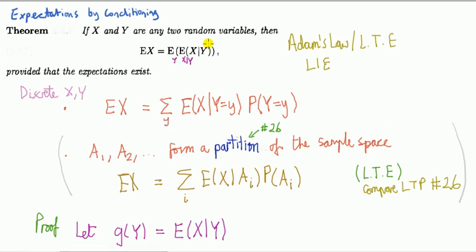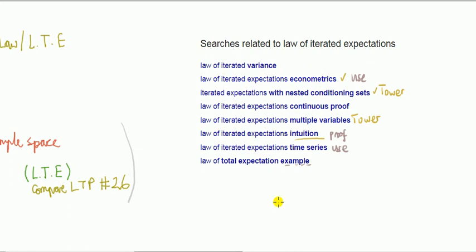Well, we can condition on more than one event, or more random variables, and this result will still hold. And that's where you get these things coming out in Google, with nested conditioning sets, with multiple variables, conditioning on multiple variables.